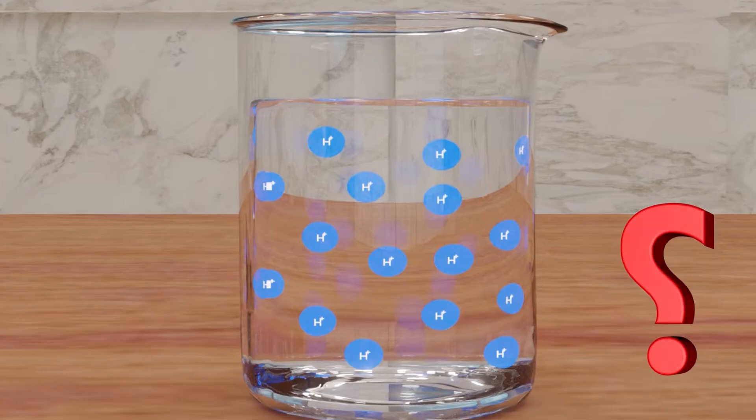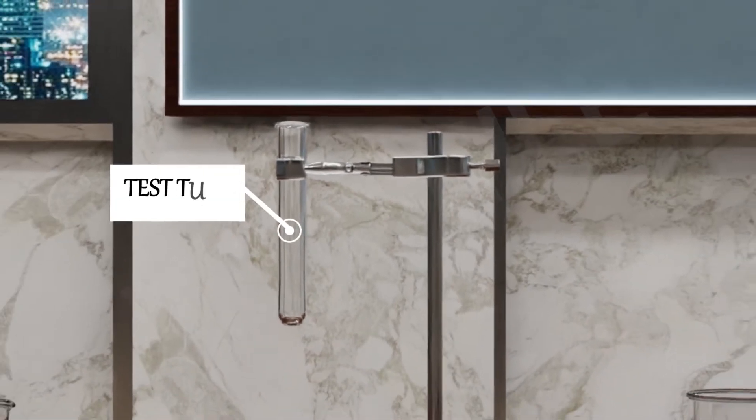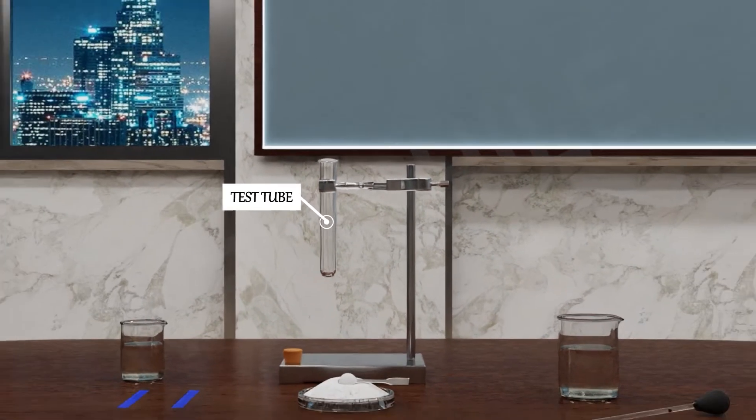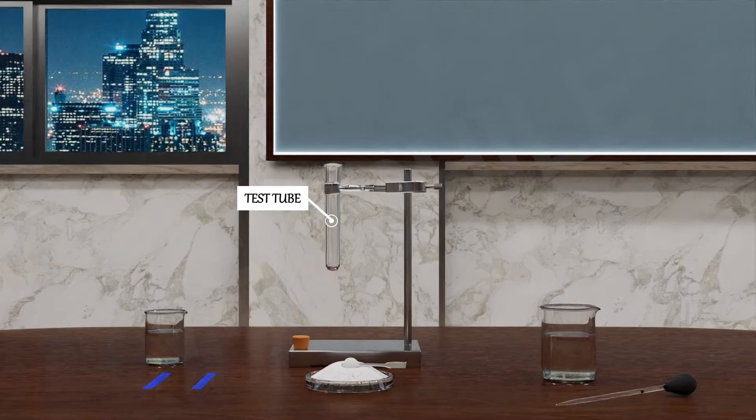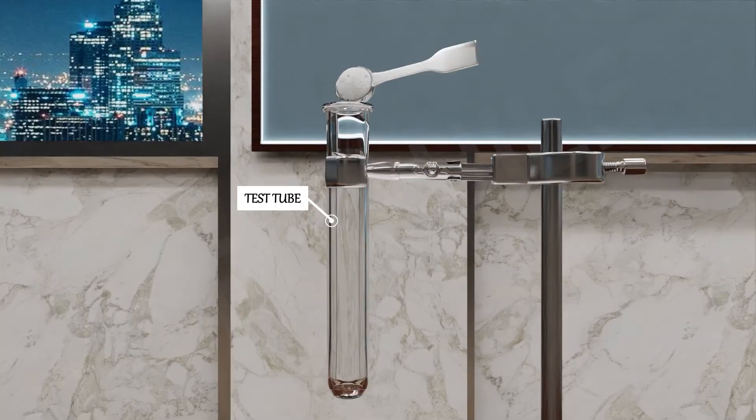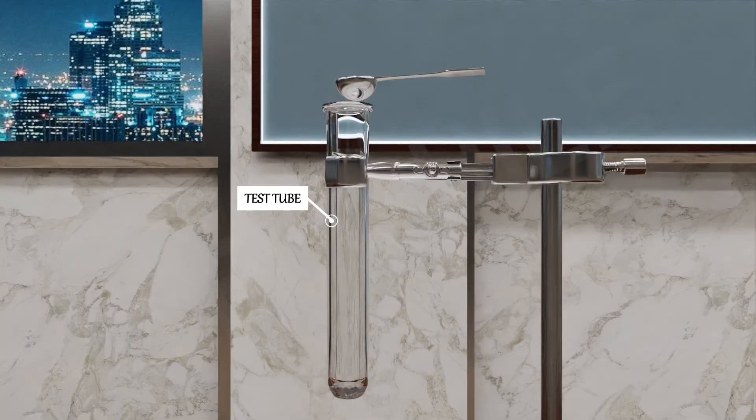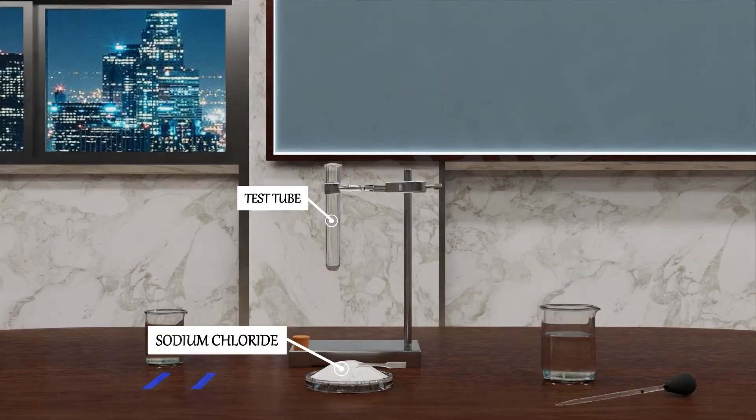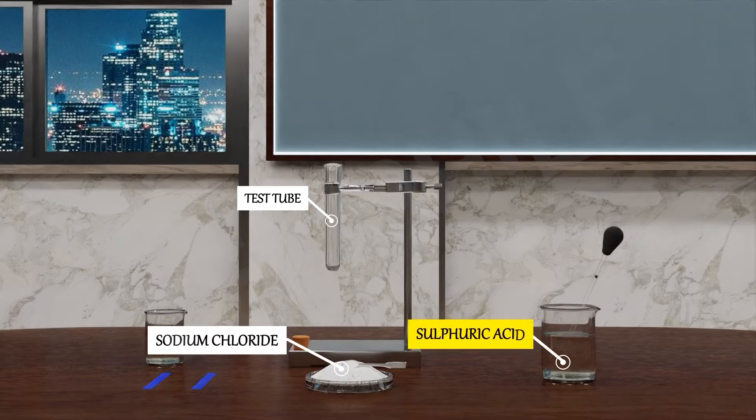So let's do an experiment. Can you see this test tube which is held by the pair of tongs? Take about 1 gram solid NaCl, meaning salt, in a clean and dry test tube.